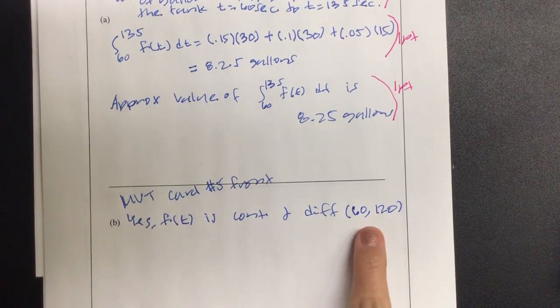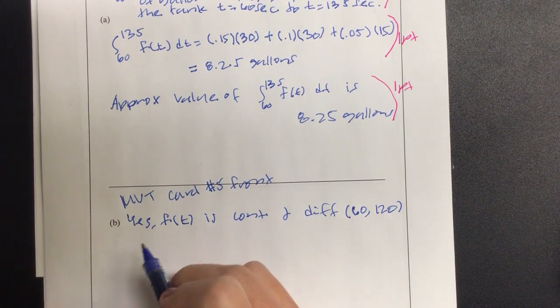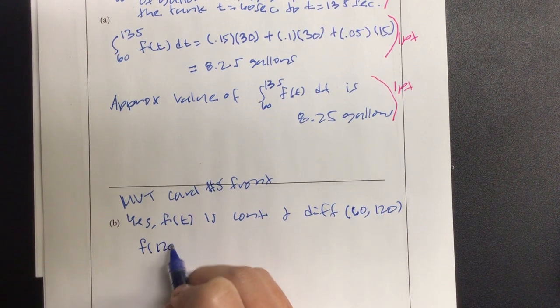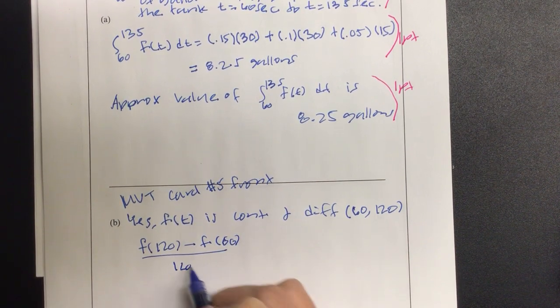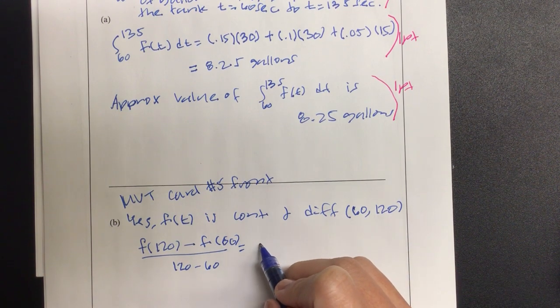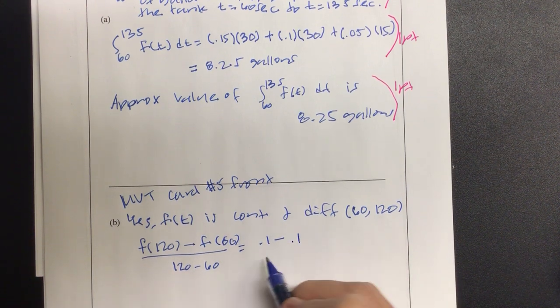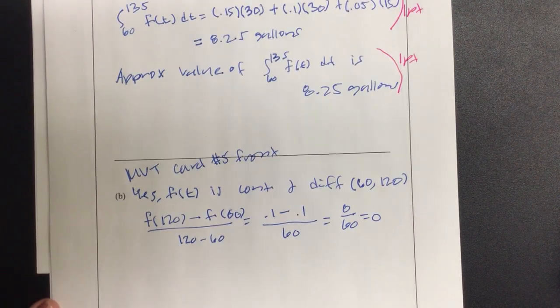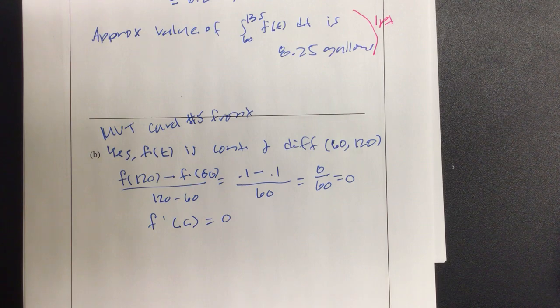And then let's go ahead and use it. So we know F of 120 minus F of 60 over 120 minus 60. That's going to give us, and I'm looking at the chart. At 60, my Y value is 0.1. Not at 60, at 120, also at 60 as well, over 60. That's going to give me 0 over 60, which is 0, which is confirming the original statement. F of C does equal 0. Always state the original.